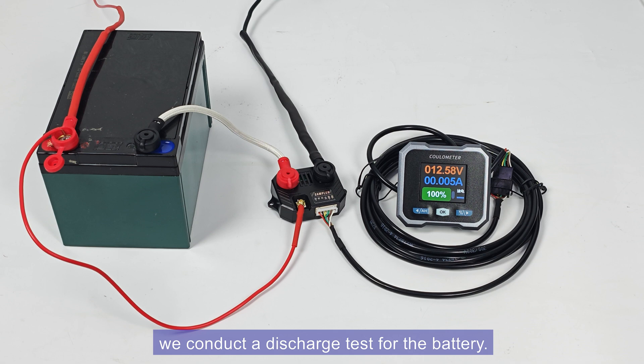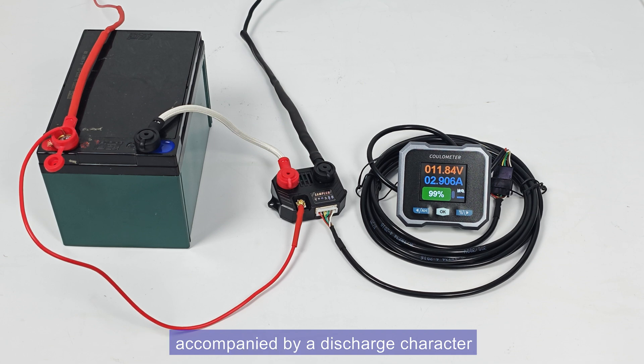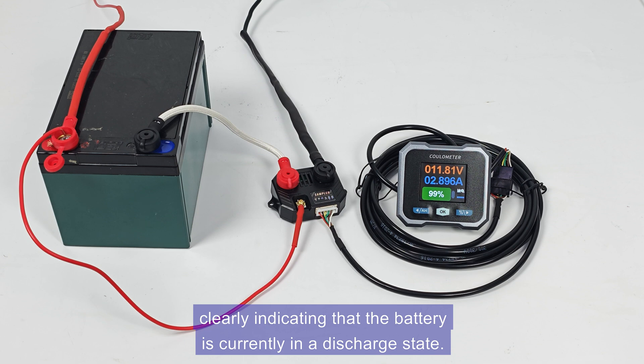Next, we conduct a discharge test for the battery. At this moment, you can see the current value displayed in blue, accompanied by a discharge character, clearly indicating that the battery is currently in a discharge state.